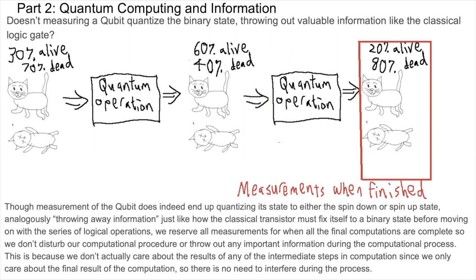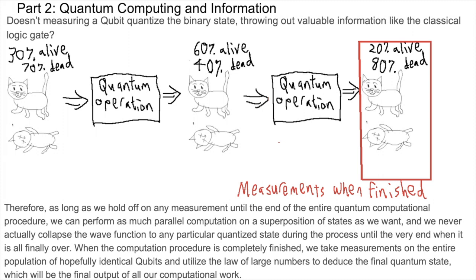Doesn't measuring a qubit quantize the binary state, throwing out valuable information like the classical logic gate? Though measurement of the qubit does indeed end up quantizing its state to either the spin down or spin up state, analogously throwing away information just like how the classical transistor must fix itself to a binary state before moving on with the series of logical operations, we reserve all measurements for when all the final computations are complete, so we don't disturb our computational procedure or throw out any important information during the computational process. This is because we don't actually care about the results of any of the intermediate steps in computation since we only care about the final result of the computation, so there is no need to interfere during the process. Therefore, as long as we hold off on any measurement until the end of the entire quantum computational procedure, we can perform as much parallel computation on a superposition of states as we want, and we never actually collapse the wave function to any particular quantized state during the process until the very end when it is all finally over.